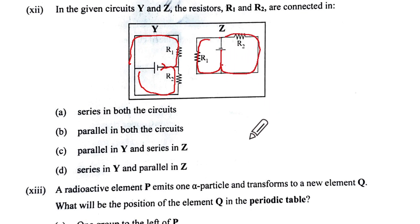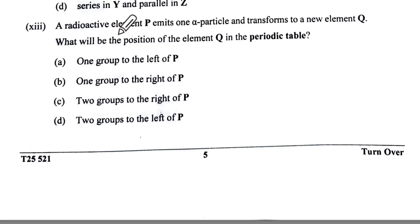A radioactive element P emits one alpha particle and transforms into a new element Q. What will be the position of element Q in the periodic table? P is here, which is your A,Z. Alpha particle means it is going to be Q, Z minus 2. So it is going to go two groups on the left. Two groups on the left is D option.